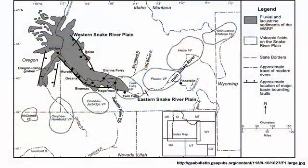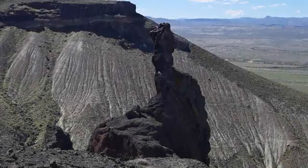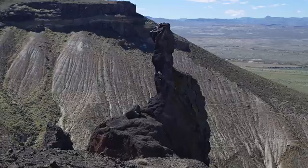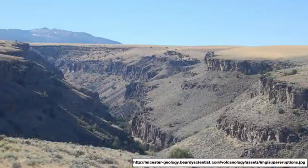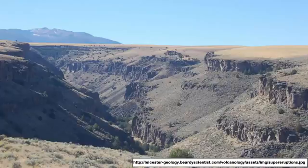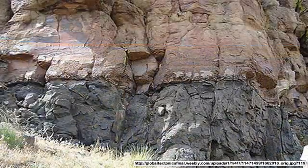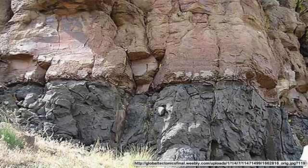The western Snake River Plain is 30 to 43 miles wide. It is a fault-bounded basin with the land surface and the rock layers dipping towards the axis of the plain. Ida-Vada rhyolitic tufts and ash flows, 15 to 11 million years old, were discharged from now-buried calderas.